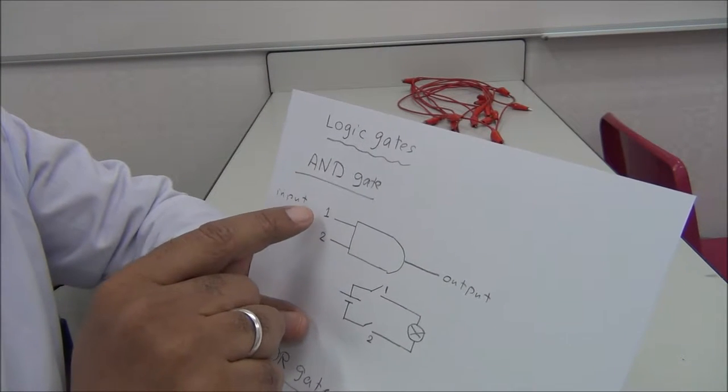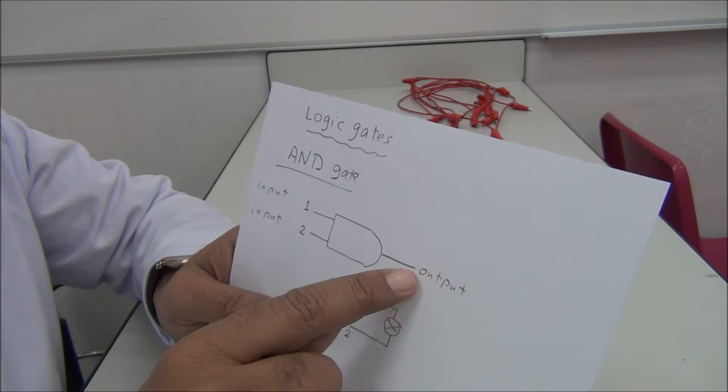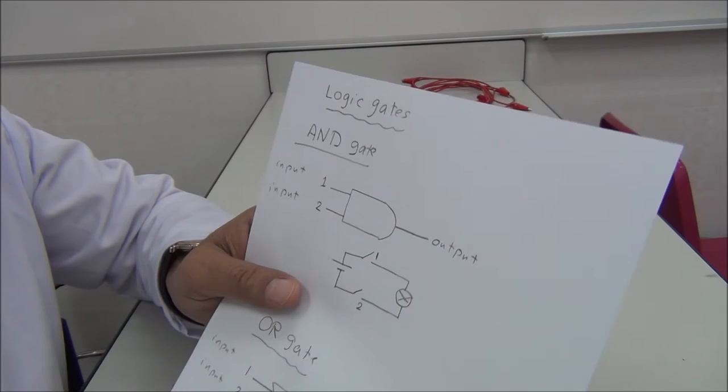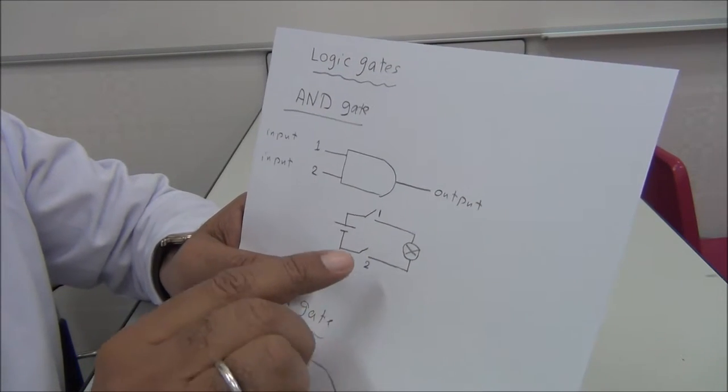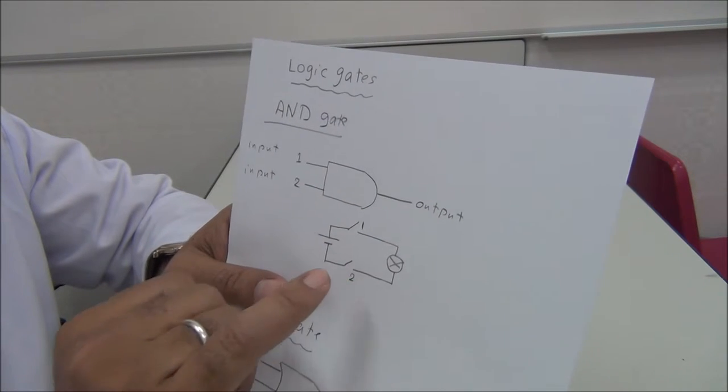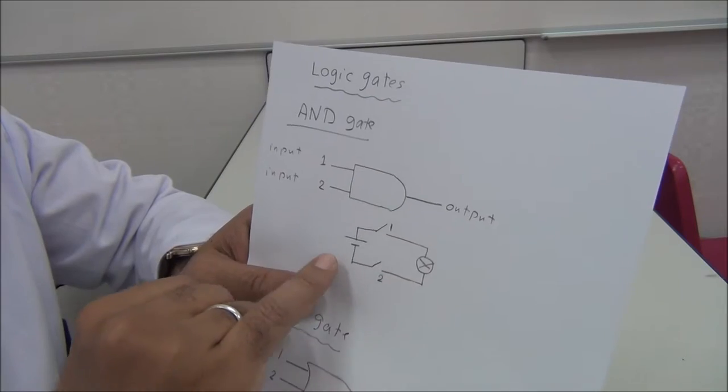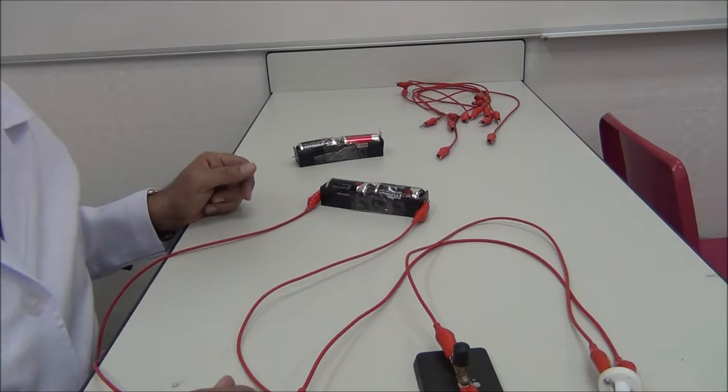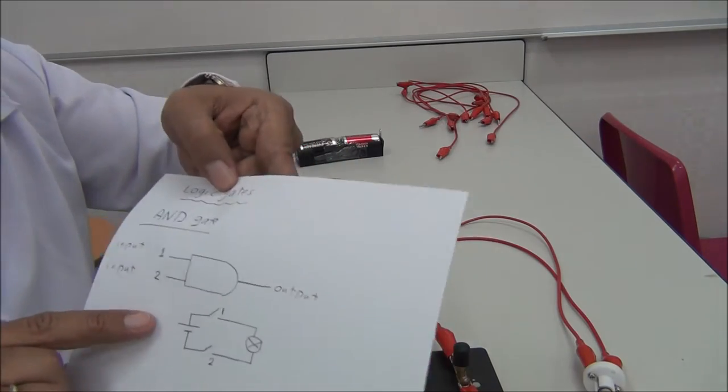...of input one and two are on, output is on. To perform this, we use this circuit. It contains two switches, one lamp, and cell. We connect the circuit as shown. Now we perform the experiment as shown.